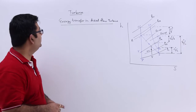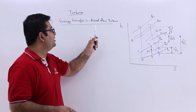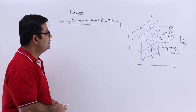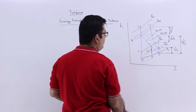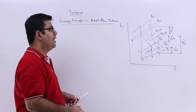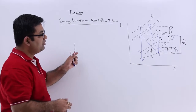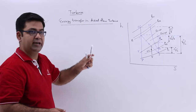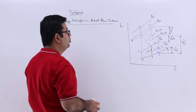Now let us talk about the energy transfer in axial flow turbine. This is the enthalpy entropy chart for an axial flow turbine. We will first of all understand the demarcations on the plot.